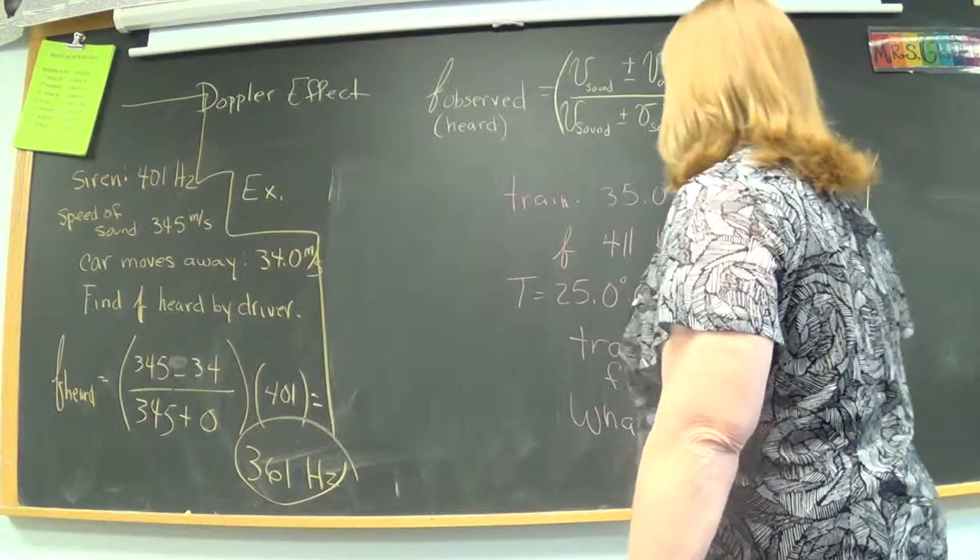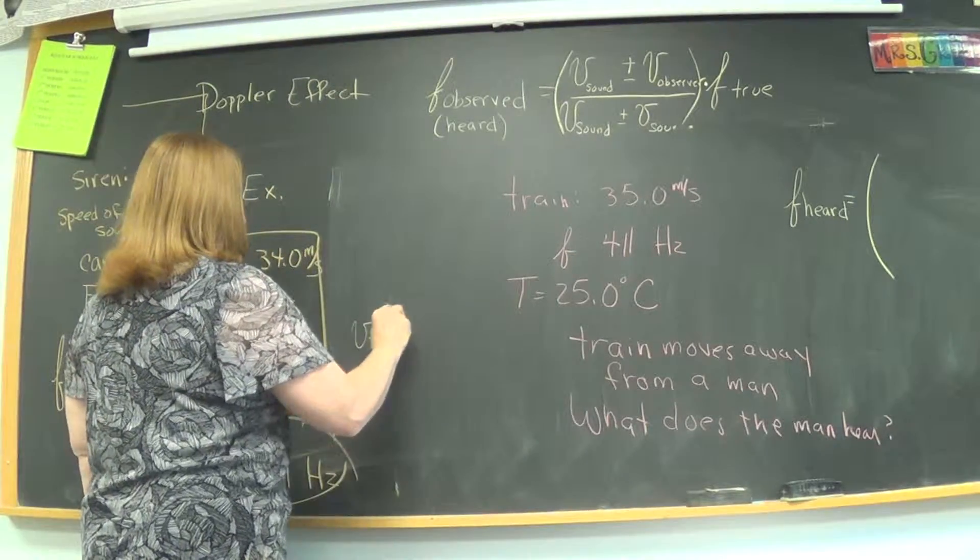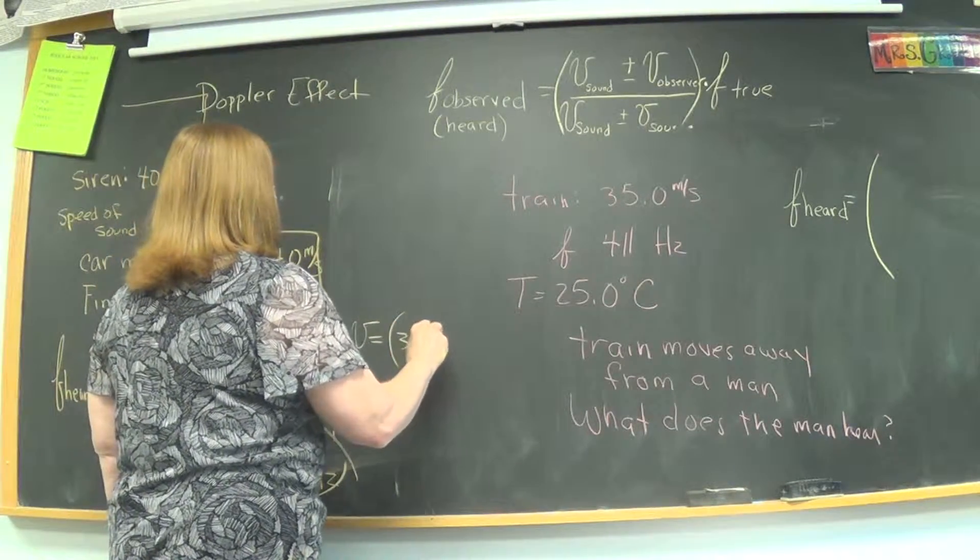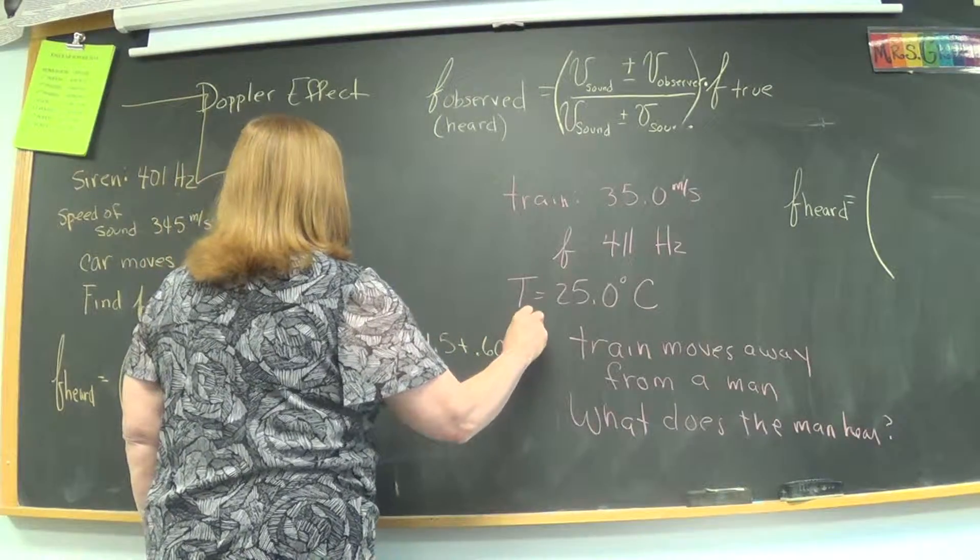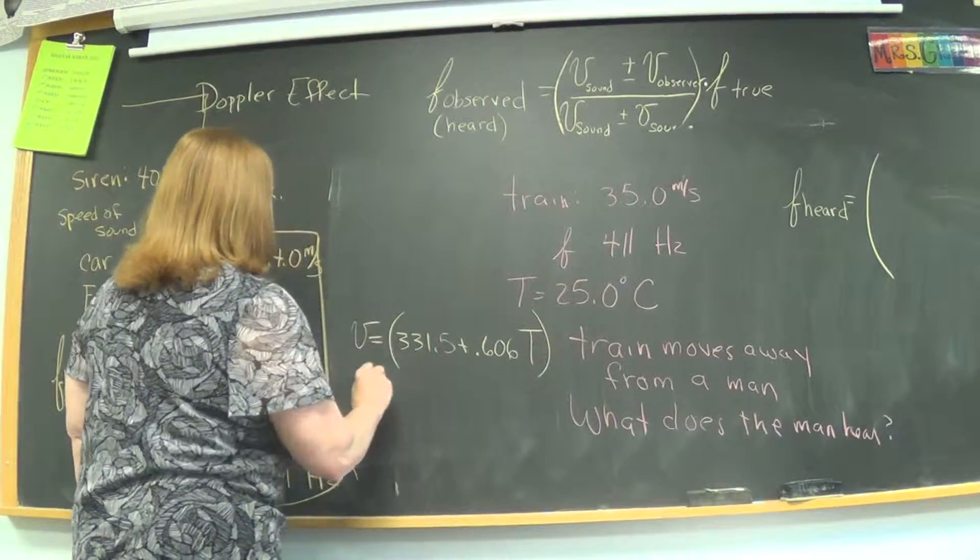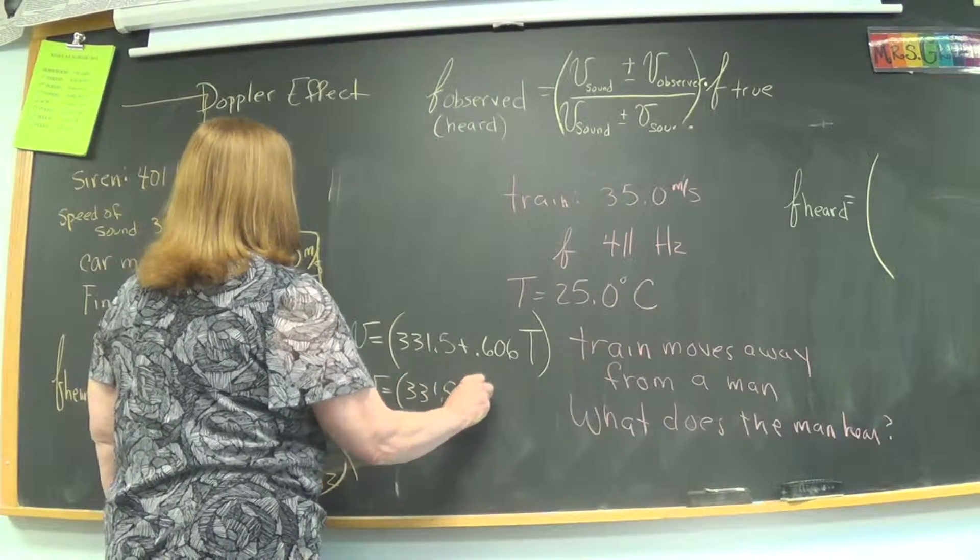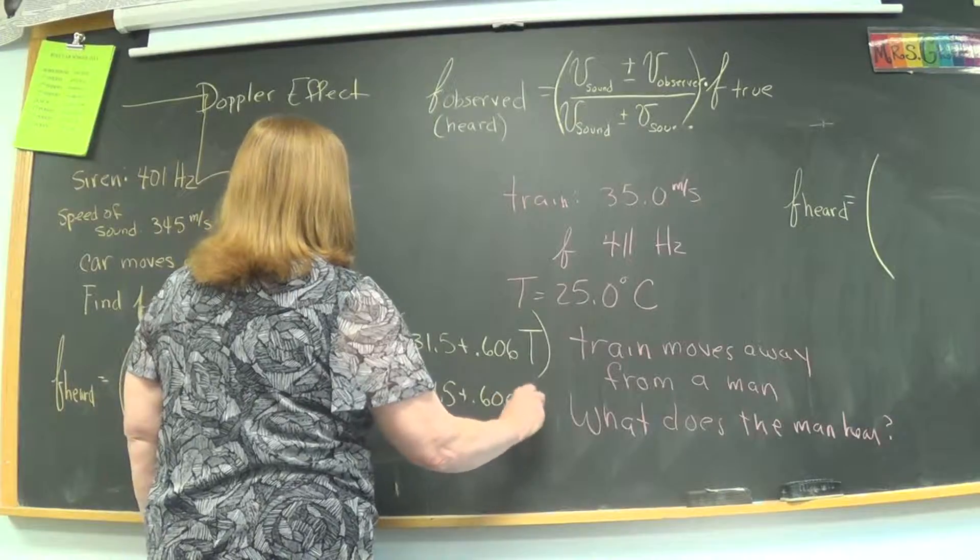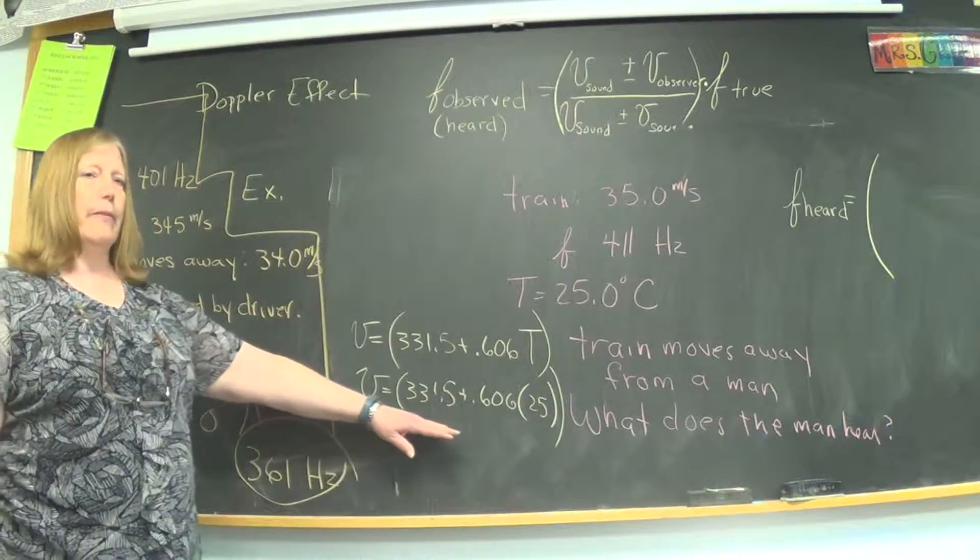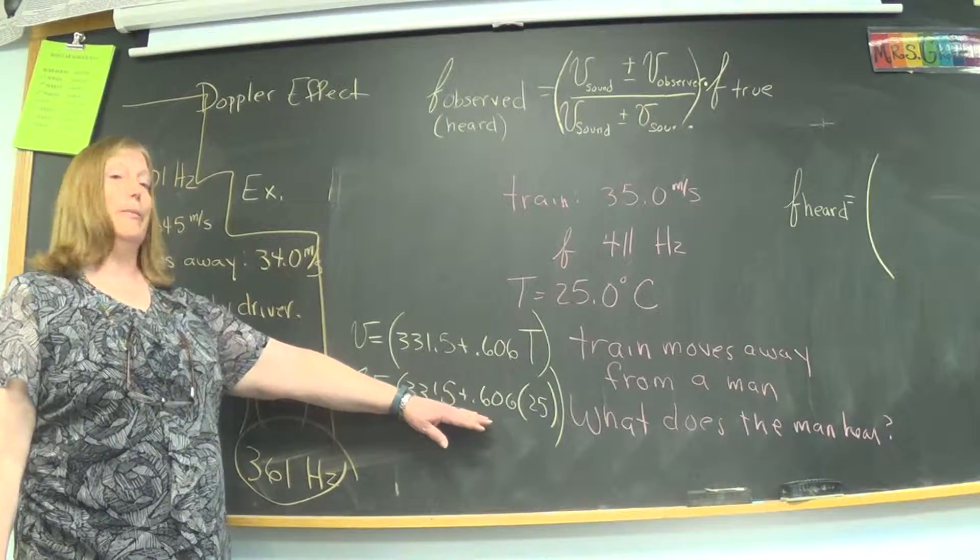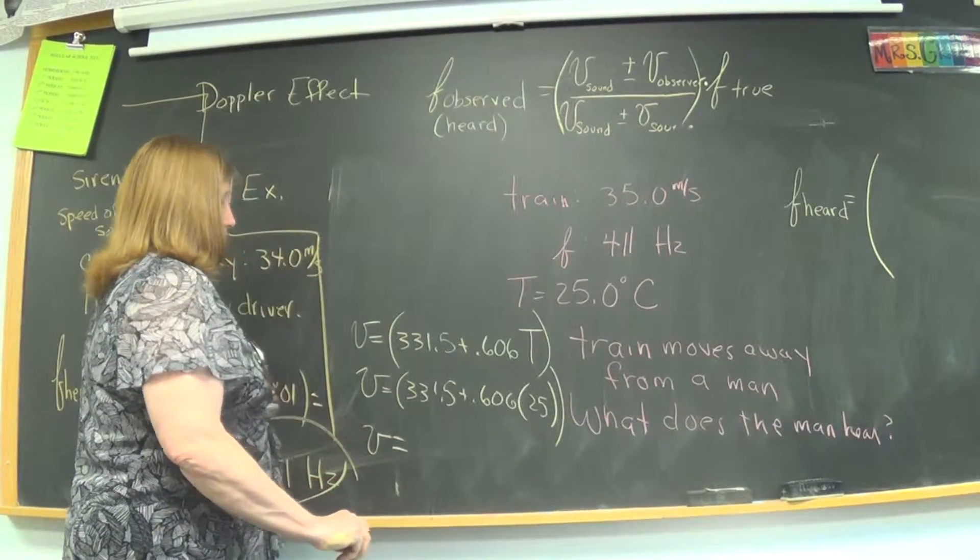All right, we have to calculate the velocity of the sound. What's the number? 331.5? Thank you. Anyone tap that out? 331.5 plus .606 times 25? 347.